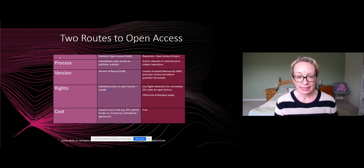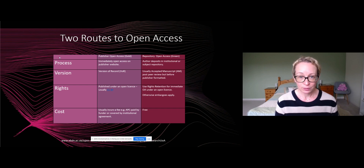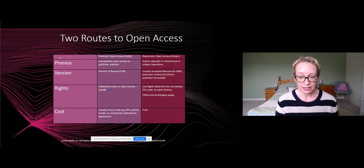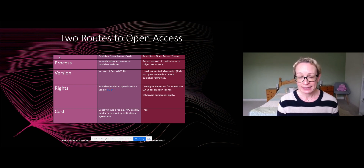The two main routes to open access are gold and green. Gold open access is when the final published version of record is made immediately open access on the publisher website. It is usually published under an open license. There is usually a cost involved, whether that is through an article processing charge (APC) paid by your funder, the institution, or it might be covered by an institutional open access agreement.